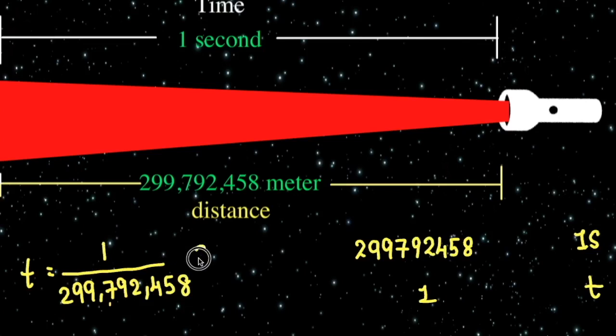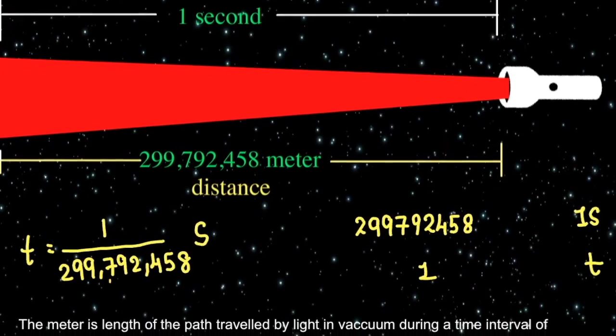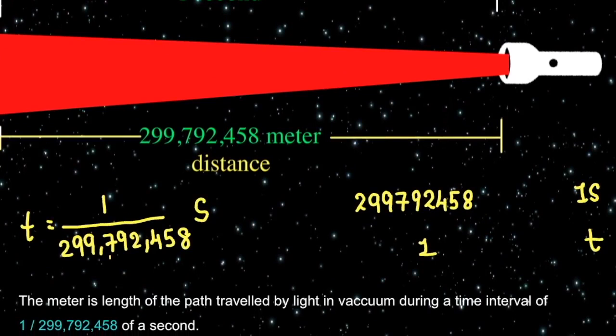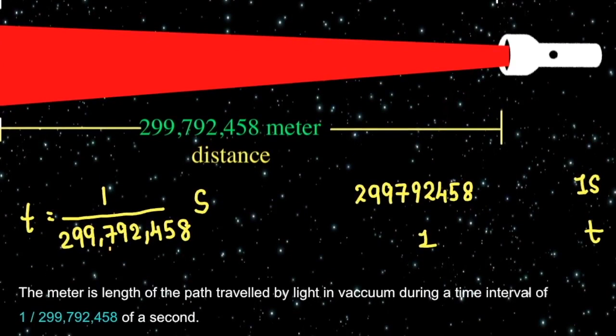So, this will be the time taken by light to travel exactly 1 meter distance and that's what the definition of 1 meter is. The meter is the length of the path travelled by light in vacuum during a time interval of 1 upon 299,792,458 of a second. So it's a standard definition of 1 meter length.